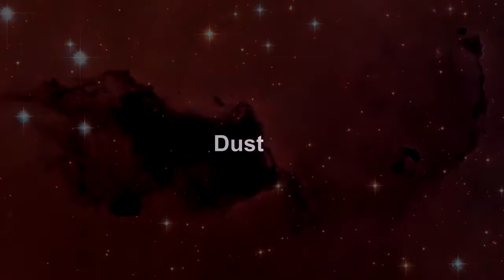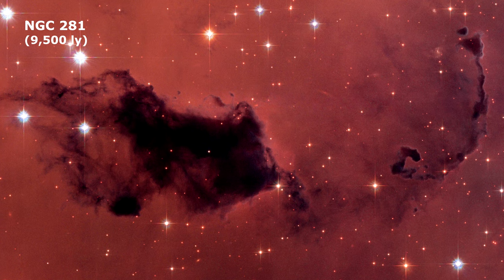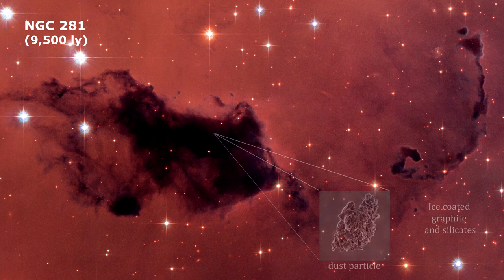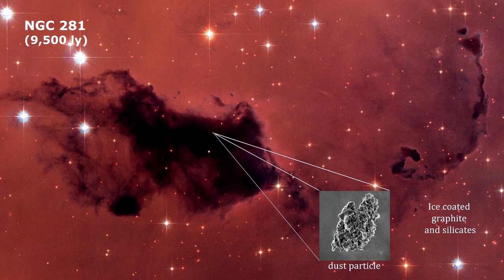Dust is a key ingredient in interstellar space, because cosmic dust shelters forming stars, becomes part of planets, and can contain the organic compounds that lead to life as we know it.